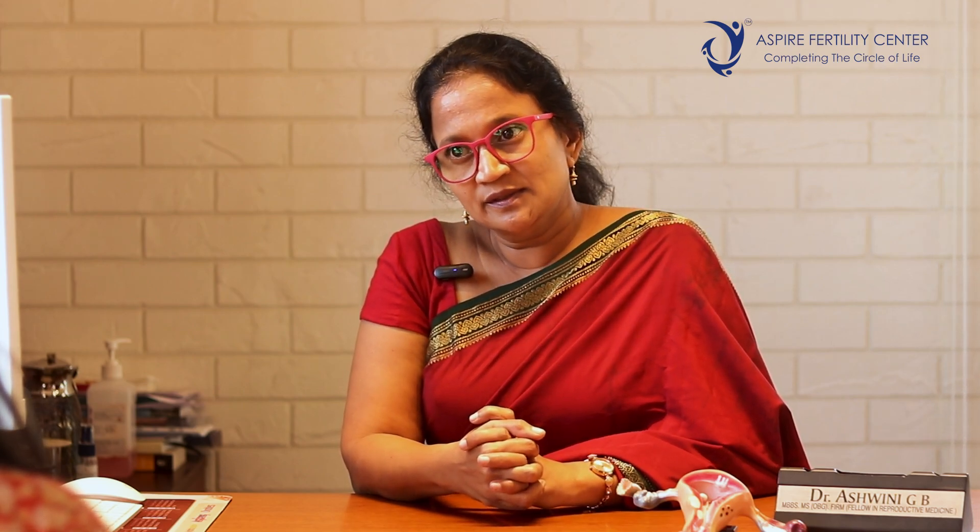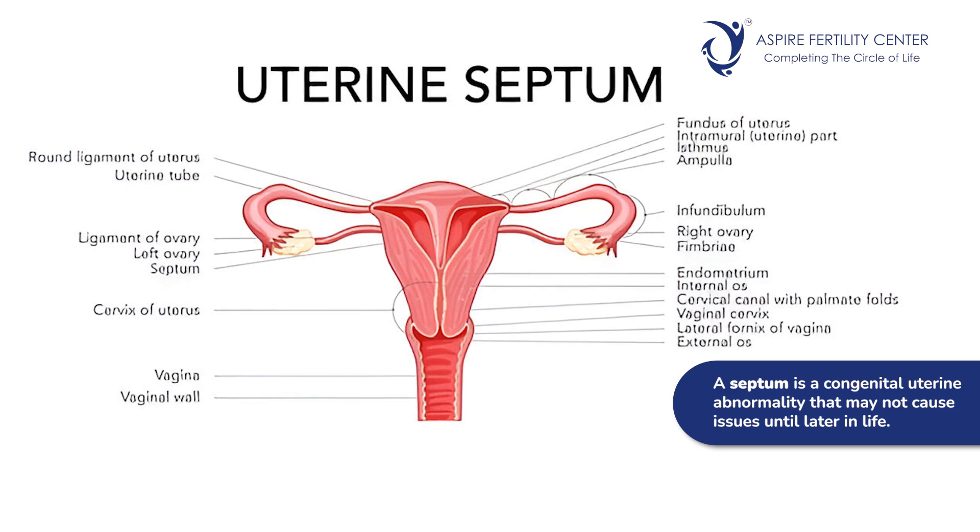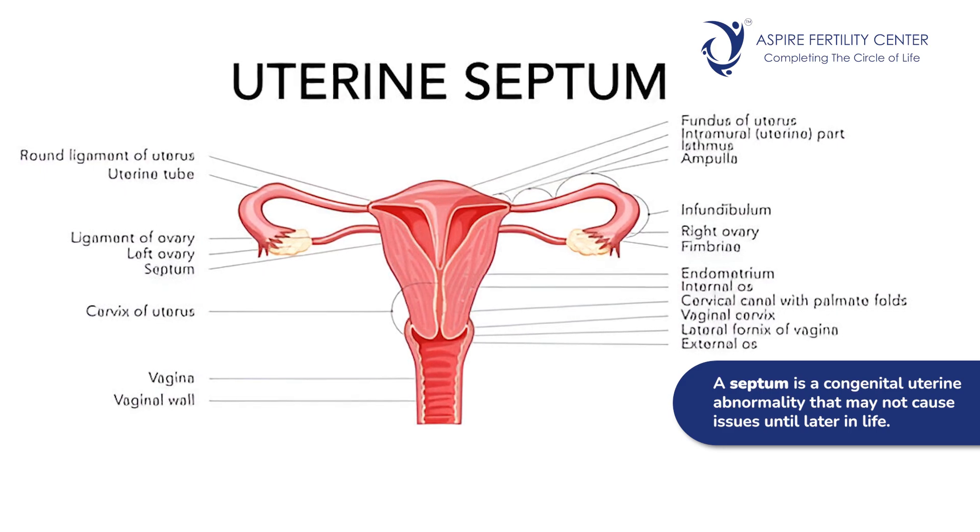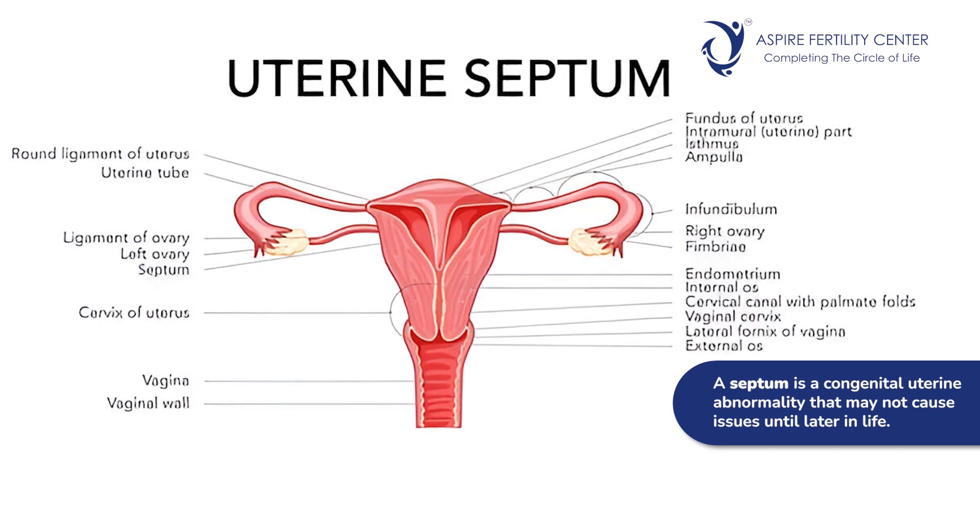Another finding we may come across is a septum, which is an important reason not only for infertility but also recurrent pregnancy losses. Septum is a congenital structure present at birth that manifests only during later reproductive life. It is a remnant of uterine development — a uterus develops as two blocks which unite and the partition completely disappears to form a single triangular cavity.